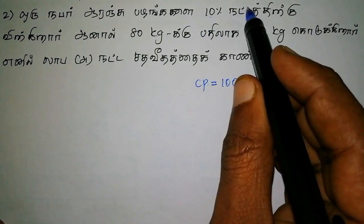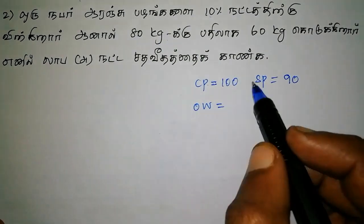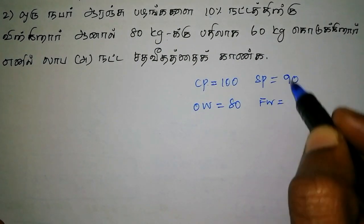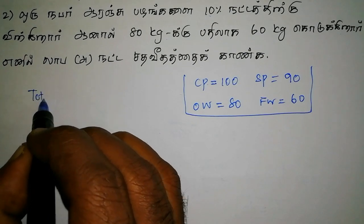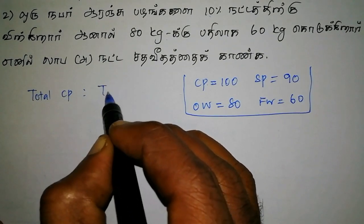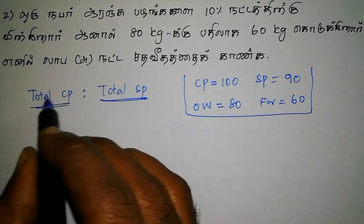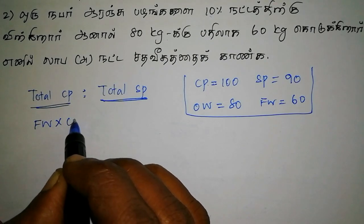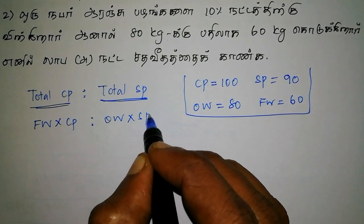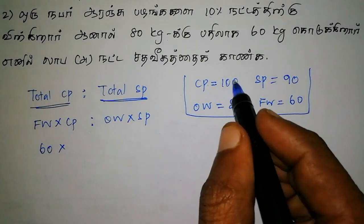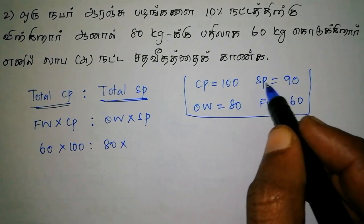So what do you buy? On the original weight, 80 kilos, and your false weight is 60 kilos. Now what do we do? The cost price is the total cost price. Total selling price: false weight into cost price divided by original weight into selling price. False weight is 60, cost price is 100, original weight is 80, selling price is 90.